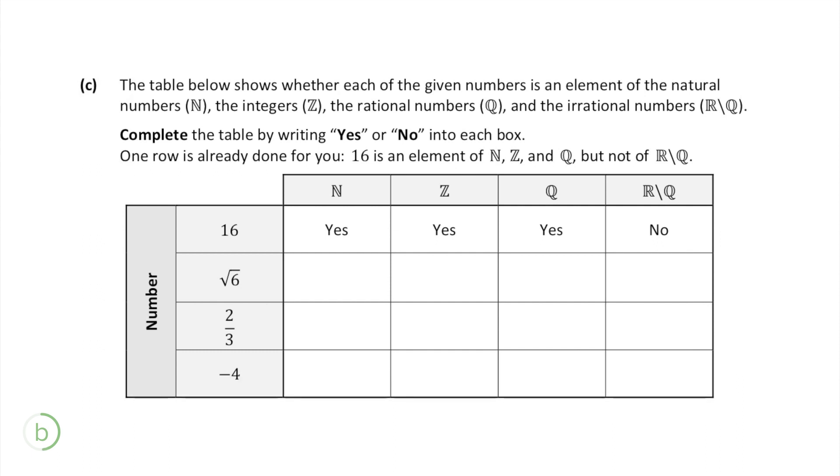This question requires you to know what natural numbers, integers, rational numbers and irrational numbers are so let's define each of them. Natural numbers are any positive whole numbers such as 1, 2 or 3. Integers are positive or negative whole numbers such as minus 1, 0 or 1.